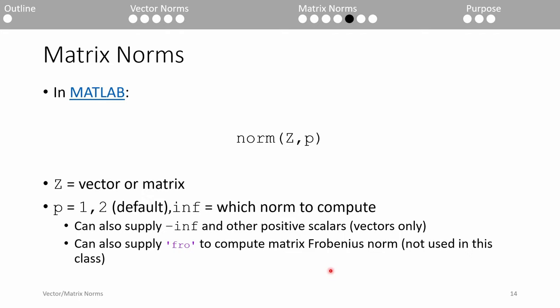For relatively small vectors and matrices, computing the norm by hand is pretty easy, but for relatively large items, it's probably more feasible to calculate it in MATLAB. The MATLAB function norm accepts two inputs. Z is a vector or matrix, and P represents which norm you want to compute. If you omit the P argument from the function call, it will default to the 2-norm for both vectors and matrices.